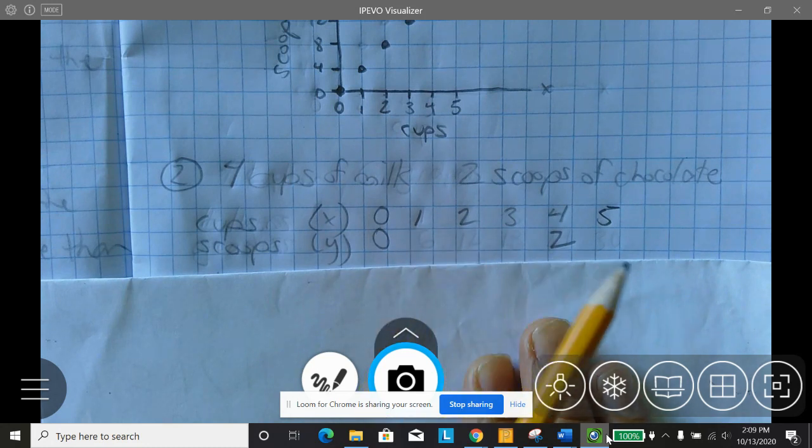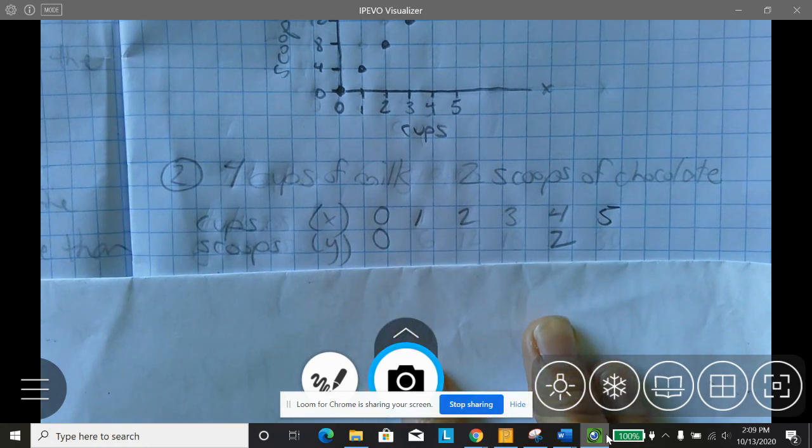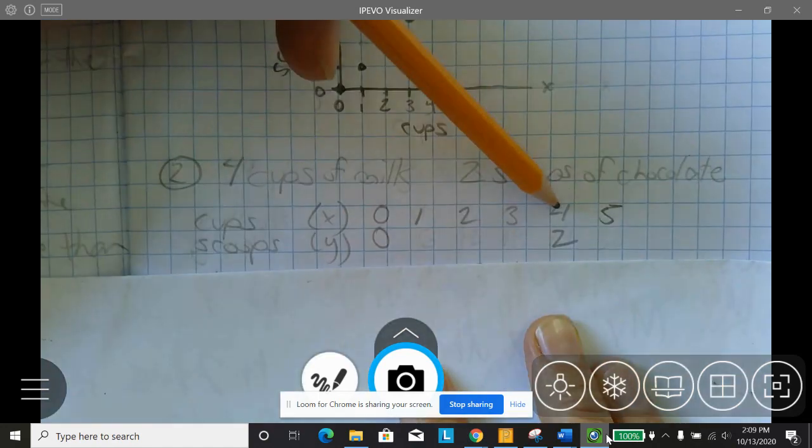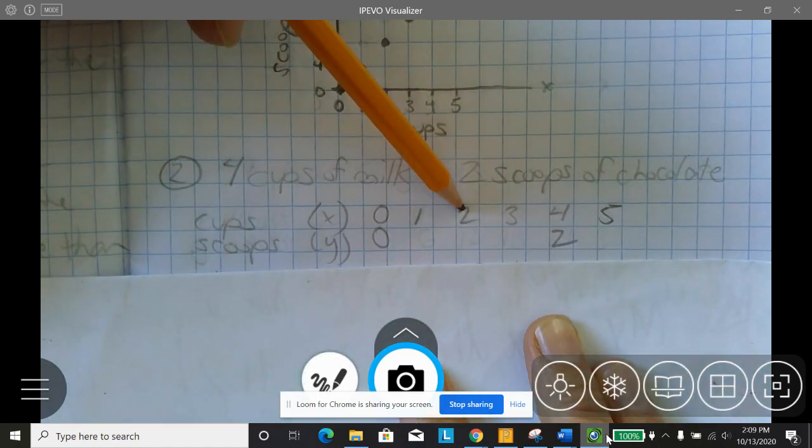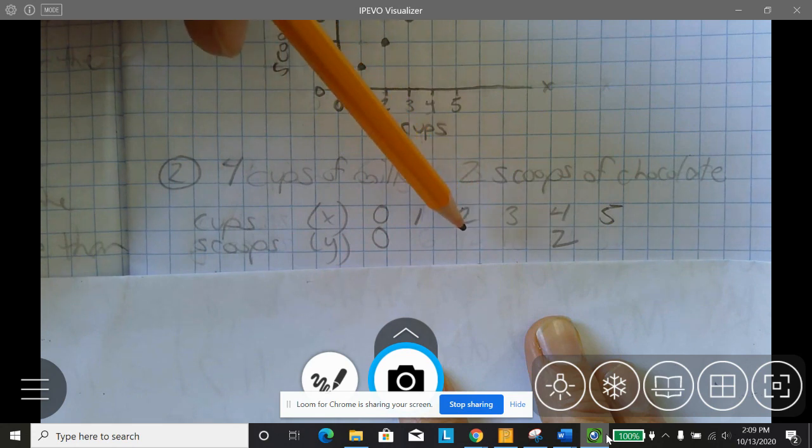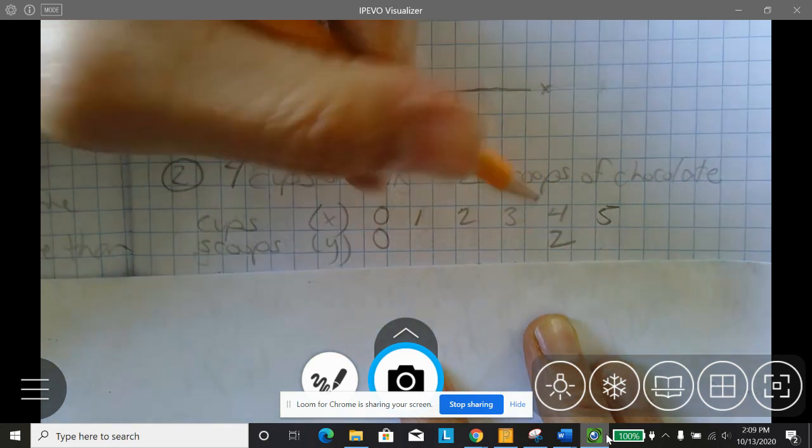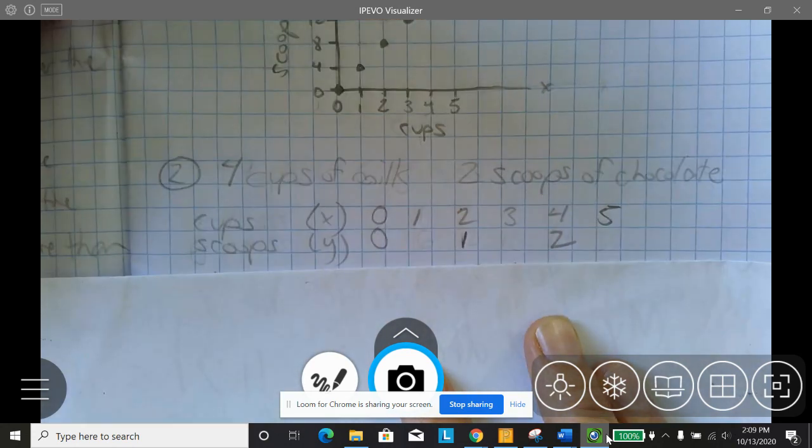Well, how can I figure out these other ones? Well, there's a couple ways. What I would do is say, well, if I have half the number of cups, then I should have half the number of scoops. So four to two is the same as two to one. That's proportional.